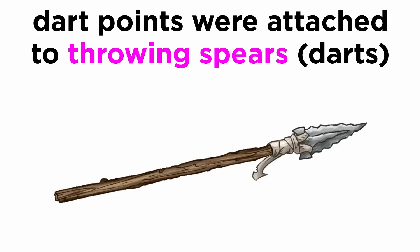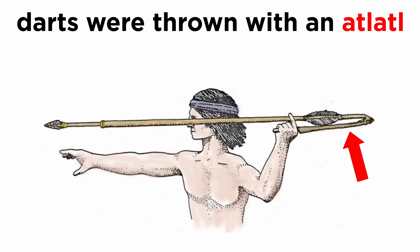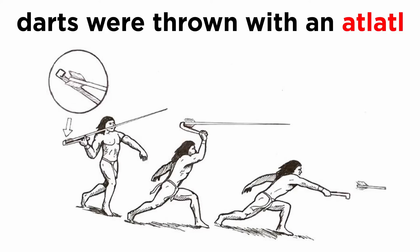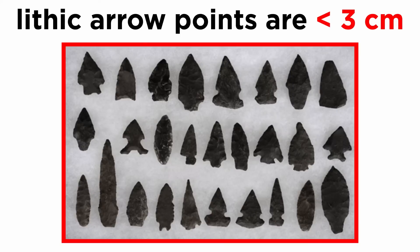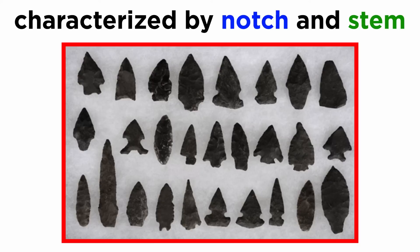Dart points were attached to throwing spears, or darts. These were either thrown just as a spear or with the assistance of a tool called the atlatl. The atlatl was an ice age invention that let people throw darts much harder and farther. Arrow points are projectile points that were attached to an arrow and shot from a bow. The main way to distinguish between these two is size. Lithic arrow points are usually no larger than three centimeters, as larger points would weigh down an arrow. So, projectile points can be further described based on two characteristics: notch and stem.